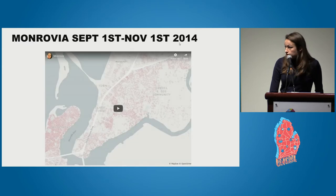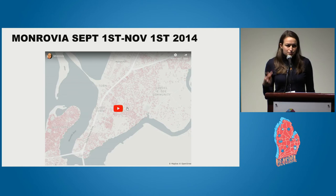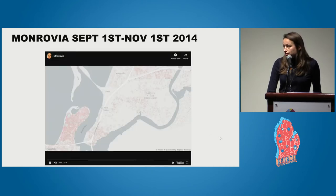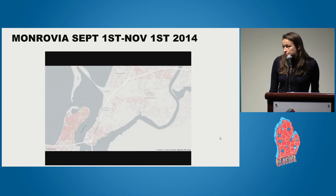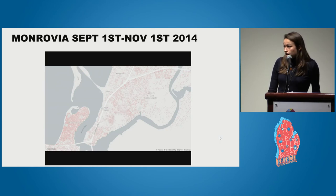This next one is Monrovia, just to show that you can go back in time. This is 2014 — one month of mapping around the Ebola crisis. Really simple. You can just see, as and when these edits came online.